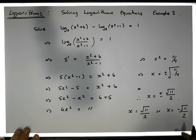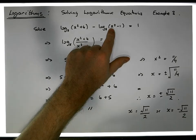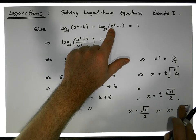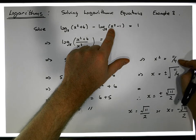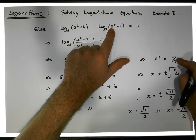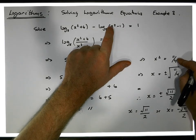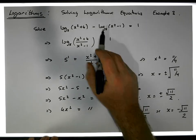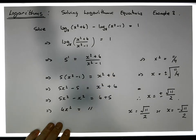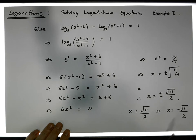When we square minus the square root of 11 over 2, we get 11 over 4. Since 11 over 4 is about 2-point-something, minus 1 still gives us a positive number. That's important because we can't take the log of a negative number — that's the only reason I tested this particular negative value.